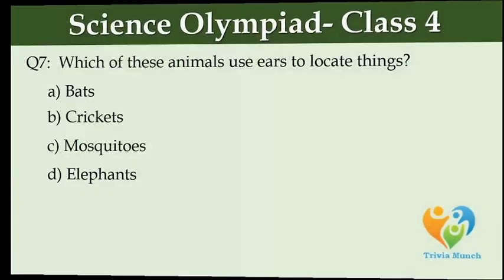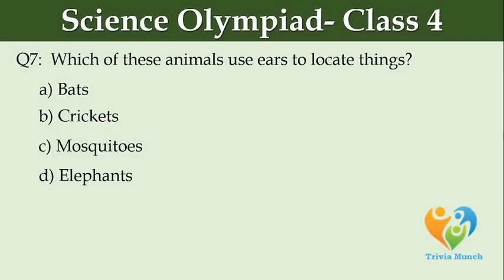Which of these animals use ears to locate things? Option A: bats. Option B: crickets. Option C: mosquitoes. Option D: elephants.